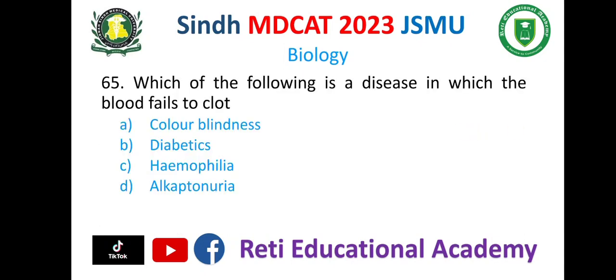Question number 65. Which of the following is a disease in which the blood fails to clot? A. Colorblindness. B. Diabetes. C. Haemophilia. D. Alkaptonuria. And the correct option is C. Haemophilia.